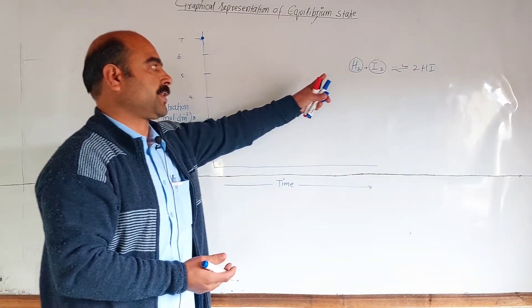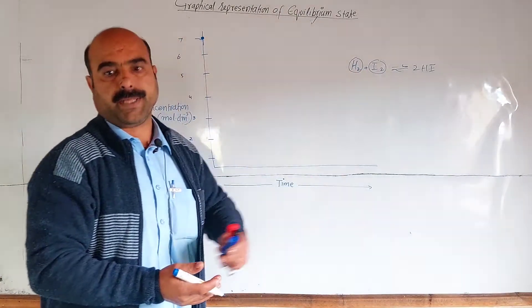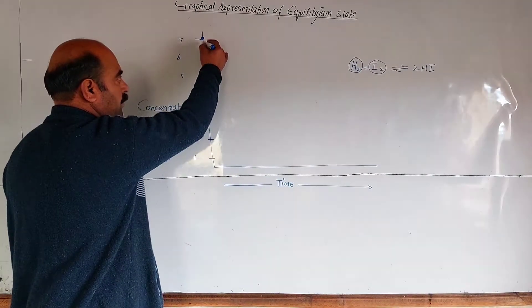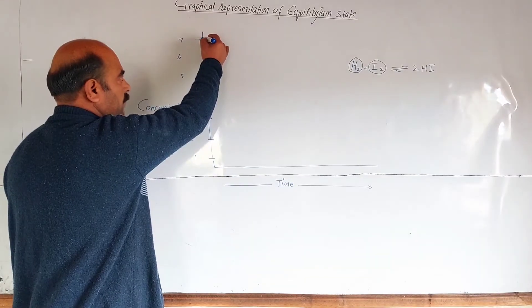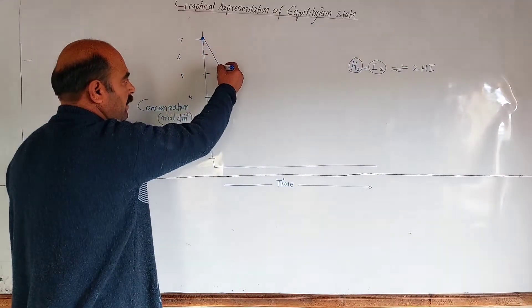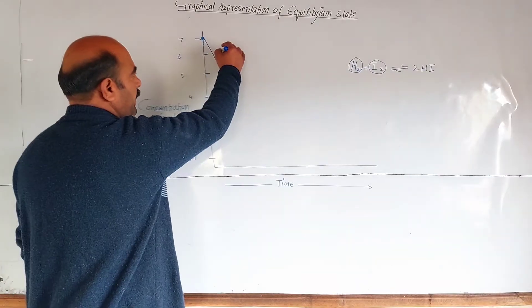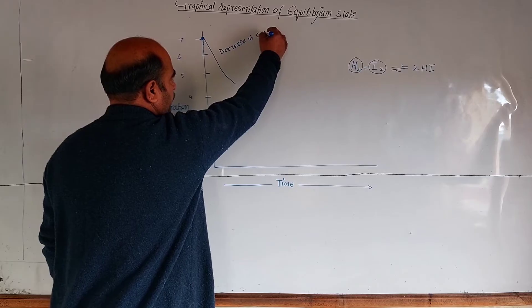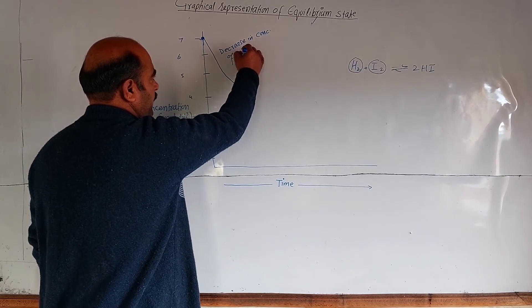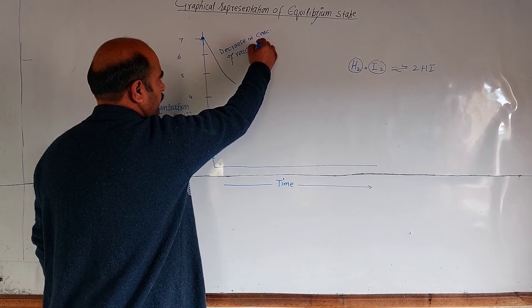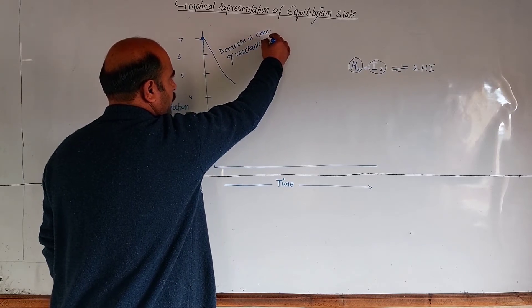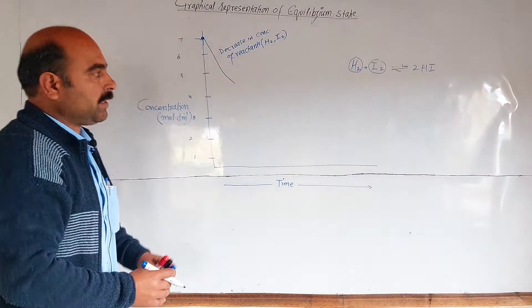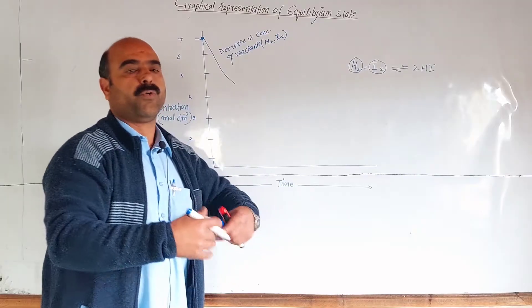When the reaction starts, the concentration of the reactants decreases — the line goes down from 7 to 6, 6 to 5, 5 to 4, and so on. The concentration of hydrogen and iodine decreases with the passage of time.